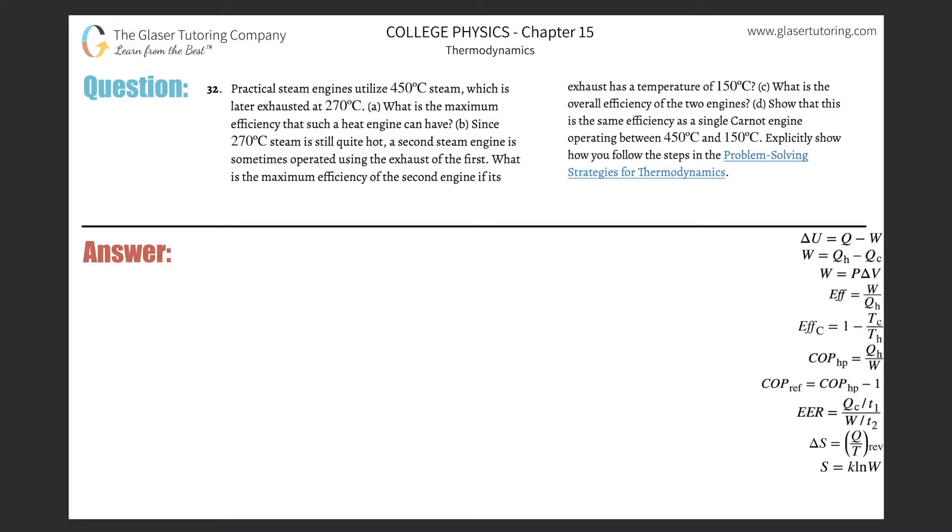Number 32. Practical steam engines utilize 450 degrees steam, which is later exhausted at 270 degrees Celsius. What is the maximum efficiency that such a heat engine can have?